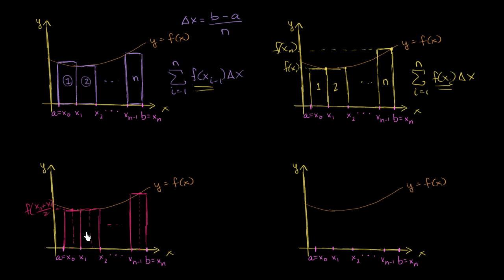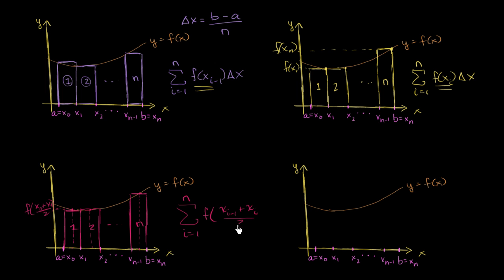So what would this sum look like? Once again, we count each rectangle from i equals 1 to n. The height isn't just f evaluated at x sub i minus 1 or f evaluated at x sub i — it's the function evaluated at the midpoint between the two: x sub i minus 1 plus x sub i, all over 2. Then we multiply that times delta x. The delta x's are the same in every one of these scenarios.